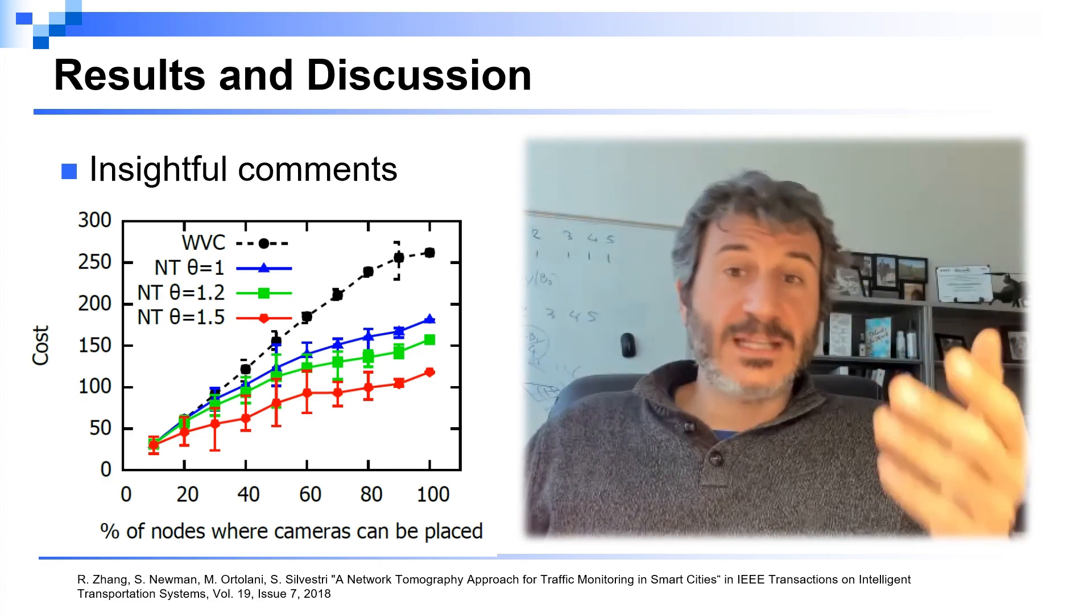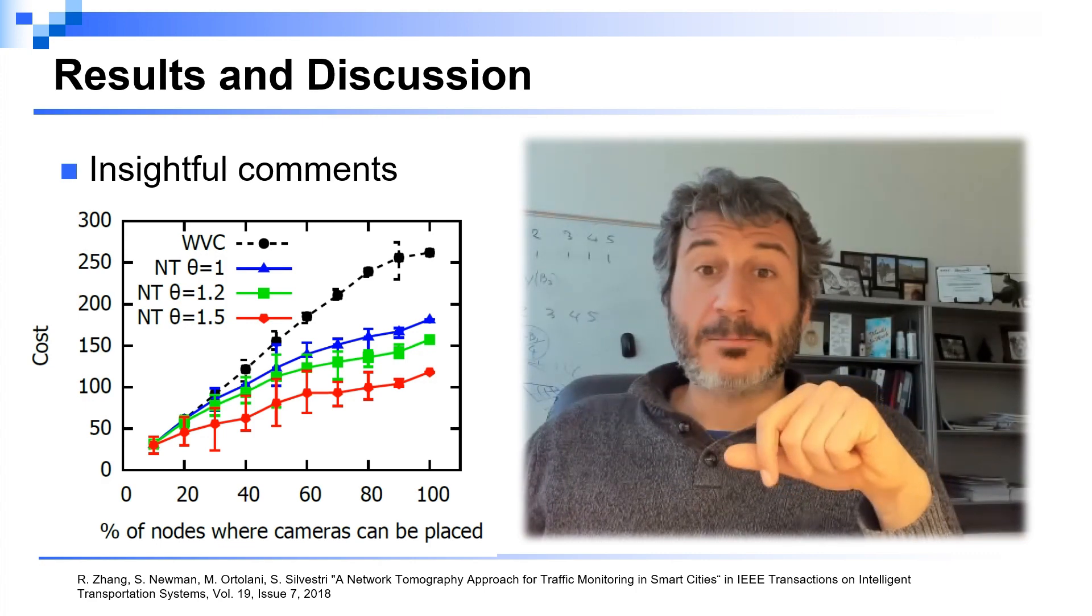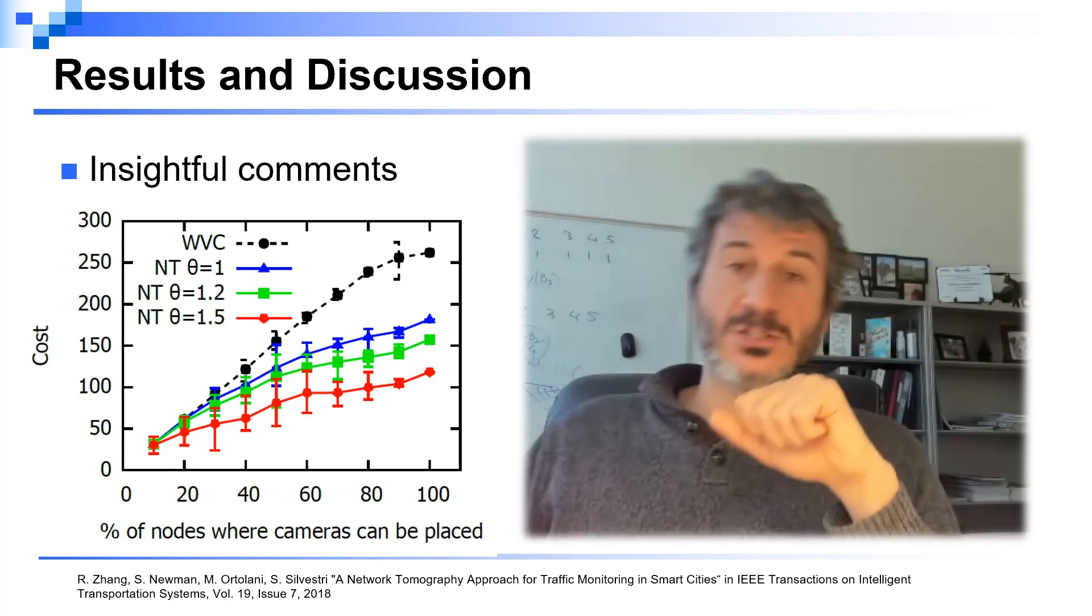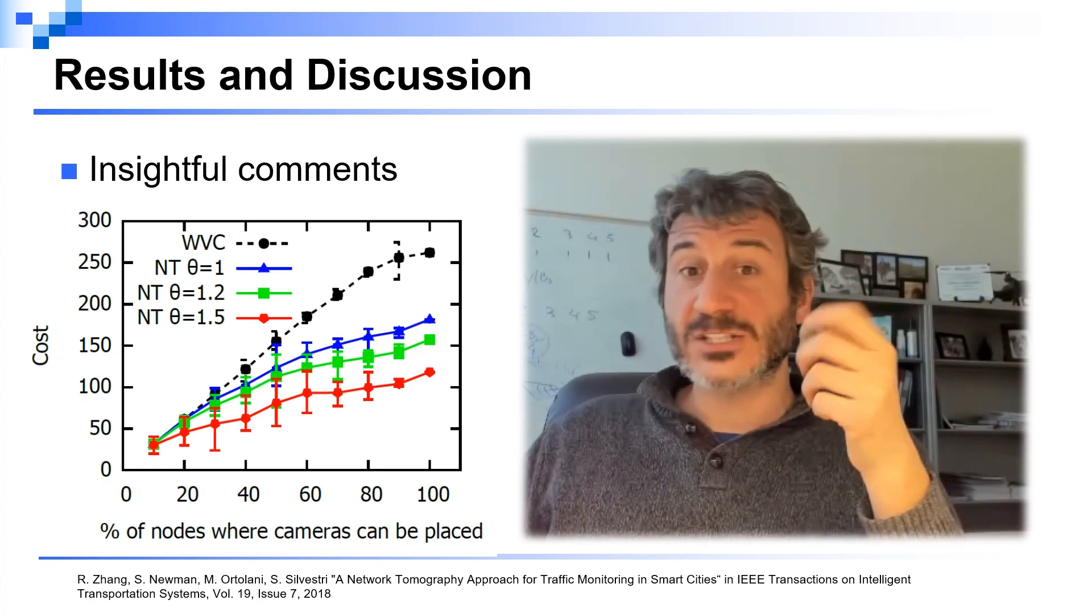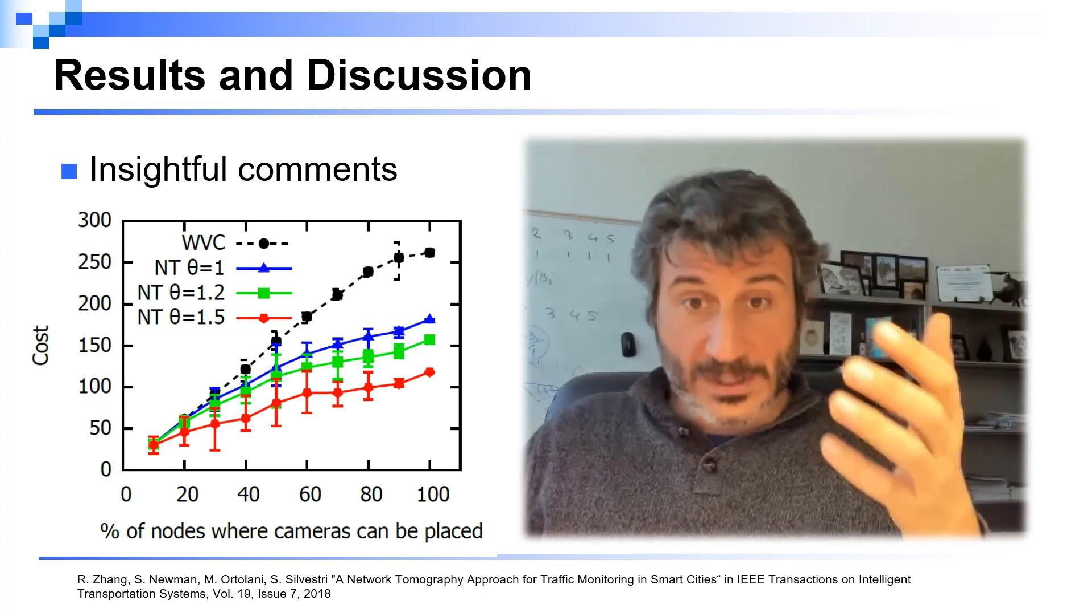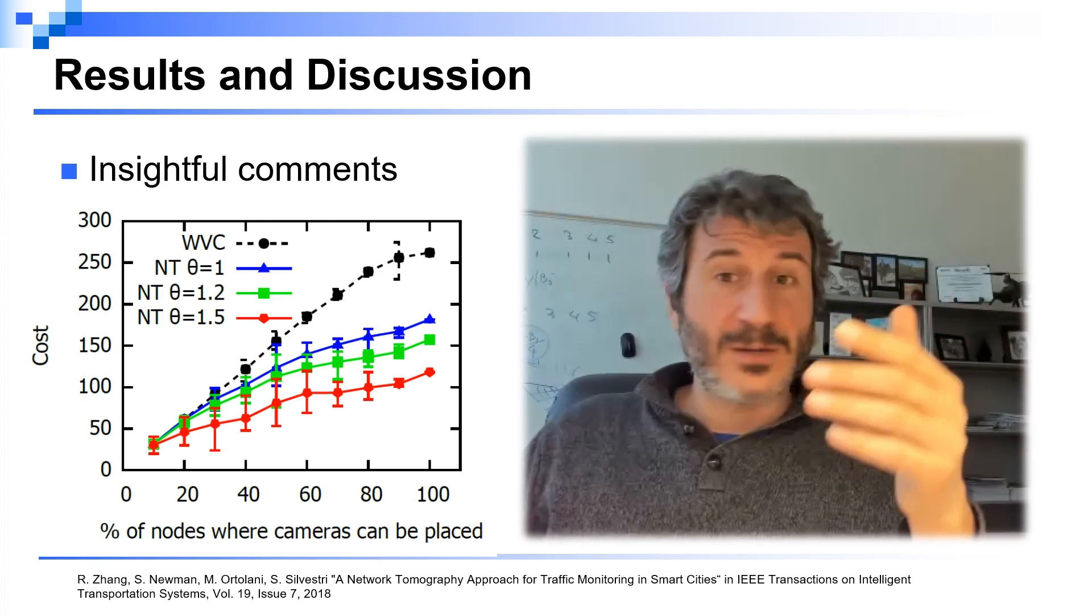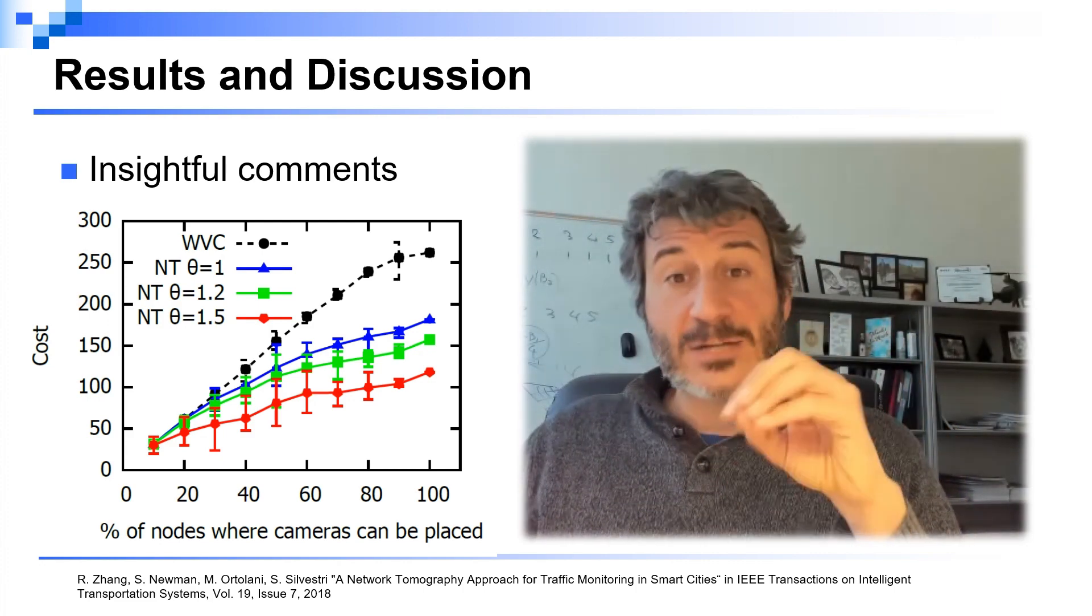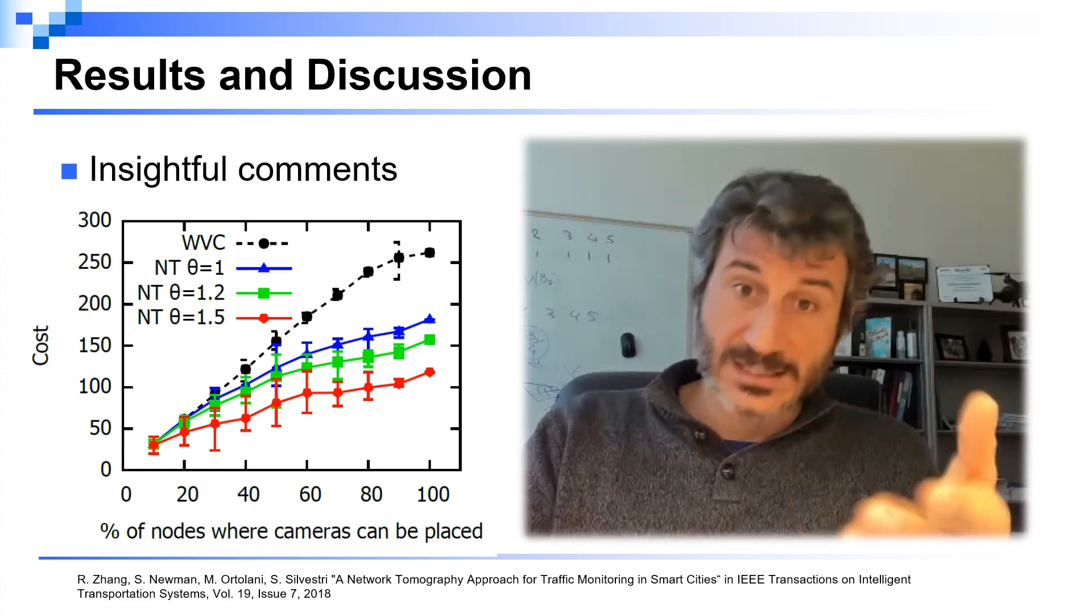Another mistake I see pretty often is to not explain some non-trivial behavior that is shown in the graph. For example, one of these algorithms could show a peak, and a peak is something that you would not expect. If intuitively you would expect the cost to increase with the percentage of nodes where you can place cameras, then why do we have a peak at a certain point? Is this something that is just an outlier, or maybe there is some deeper meaning for which this is happening? It's very important when something like this happens that you look at the results of your simulation, try to understand why that happens, and then explain it in the experimental results. Sometimes the answer is simple—you found an outlier and you just need more runs for that specific setting. But some other times the meaning can be deeper and can actually show a weakness of your algorithm that you just didn't think about. That could be a good input for improving your algorithm.